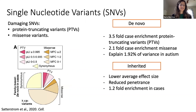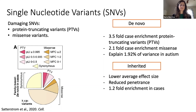Damaging single nucleotide variants, or SNVs, include protein truncating and missense variants. There is substantial case enrichment of novel protein truncating variants and missense variants, and in total all exome de novo SNVs explain about 2% of the variance in autism liability. Rare inherited SNVs have a smaller average effect size and reduced penetrance compared to de novo pathogenic mutations, and there is little difference in the overall rate compared with unaffected siblings.